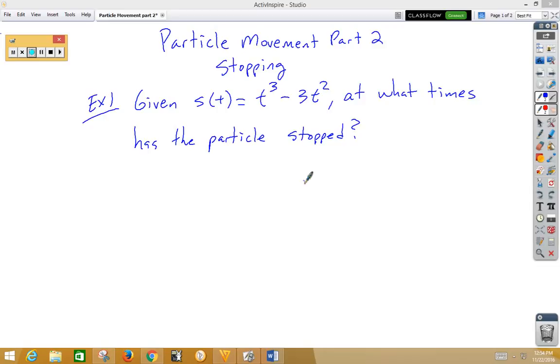Well, let's first find the velocity function. So s'(t) is the same as the velocity function, and the velocity function would be 3t² - 6t. Well, we want to know when that is equal to zero.